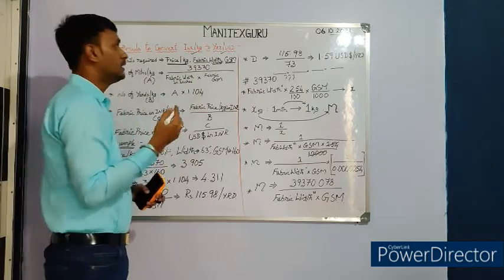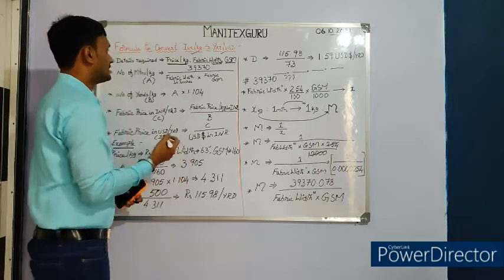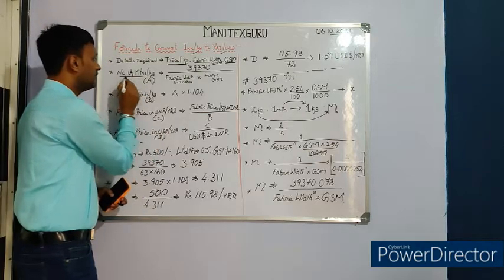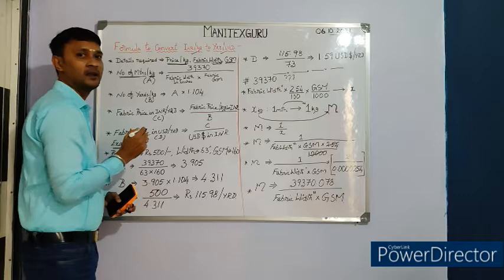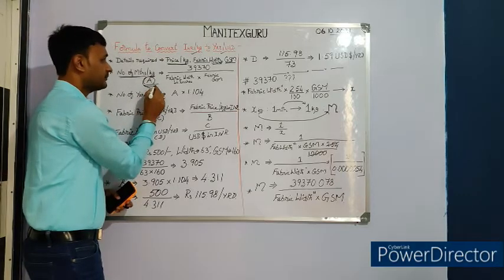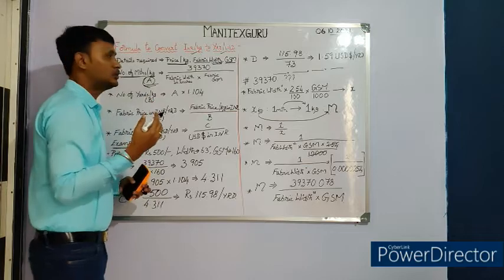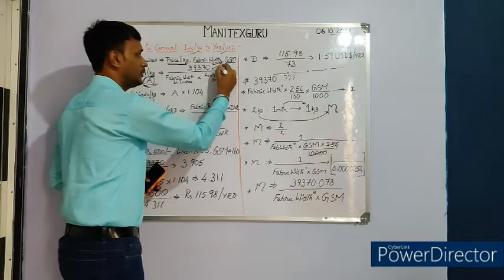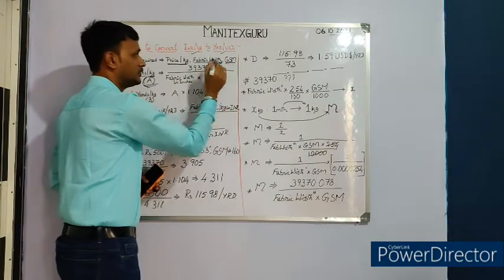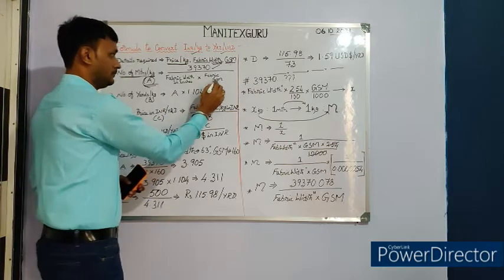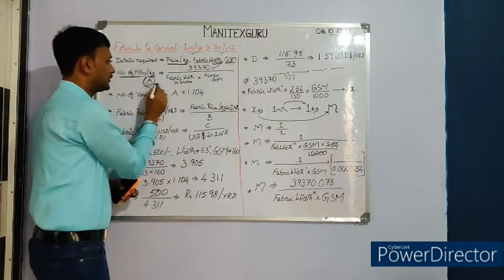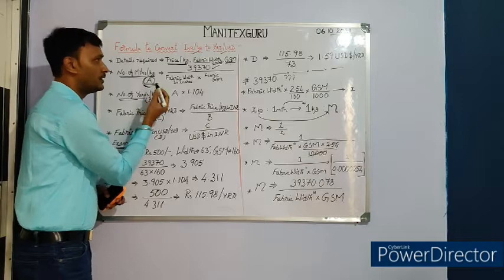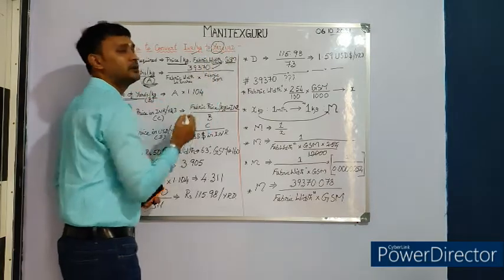The formula to convert INR per kg to yard per USD is a four-step methodology. Step one: we need to identify the number of meters per kg. The formula is 39,370 divided by fabric width in inches, multiplied by fabric GSM. The value we get is noted as A.